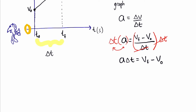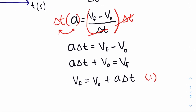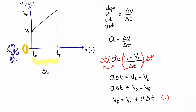Rearranging this equation further in terms of v final: a·delta t plus v initial. Now, physics equations have to be beautiful, so we flip around the equal sign and write the final velocity on the left side: v final equals v initial plus a·delta t. This is our first equation of motion — equation number one. We took the slope of the velocity time graph, which was the acceleration, and rearranged it to get v final equals v initial plus a·delta t.